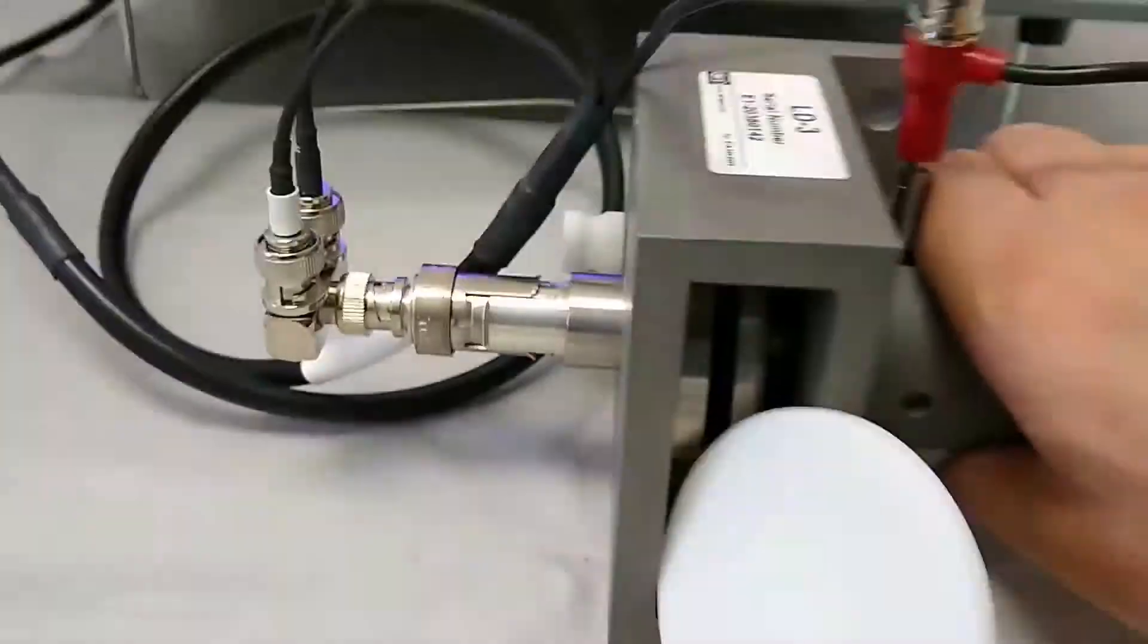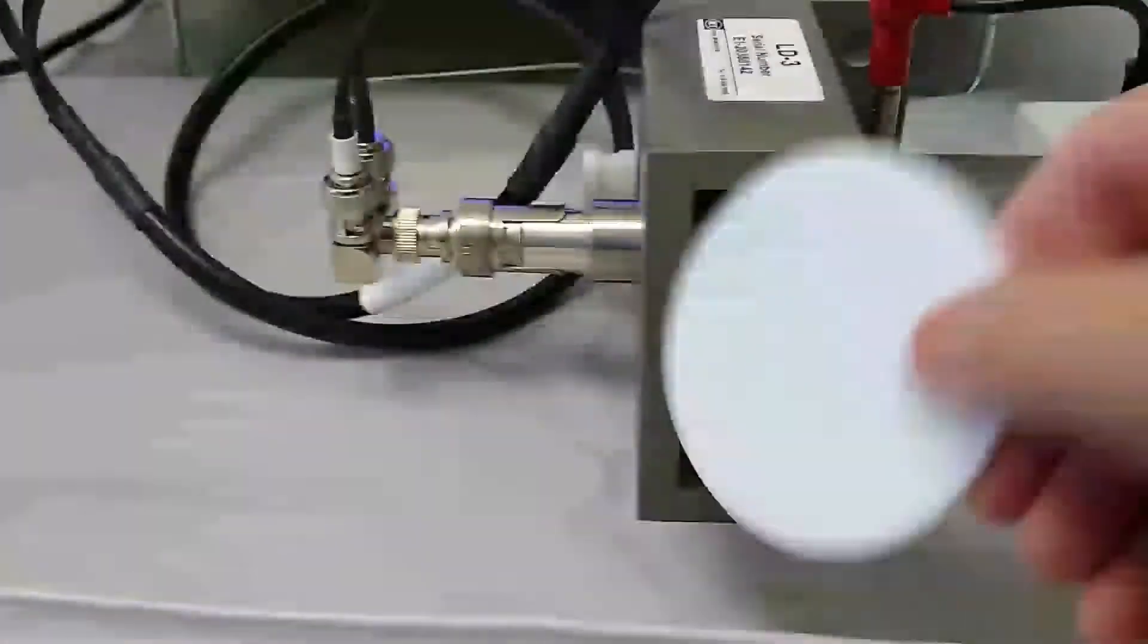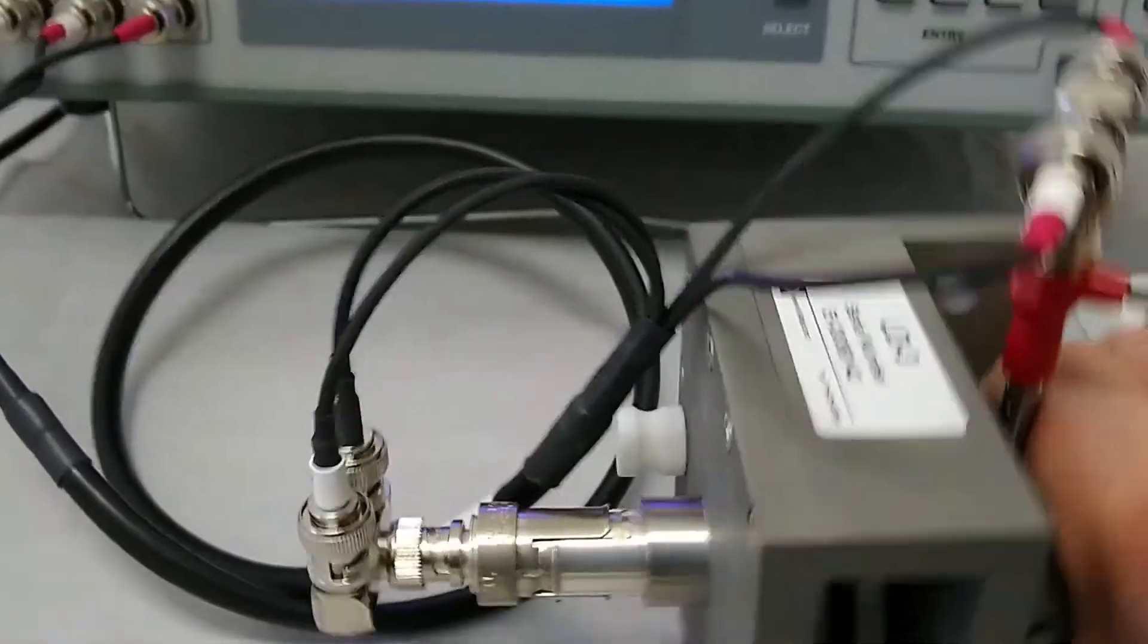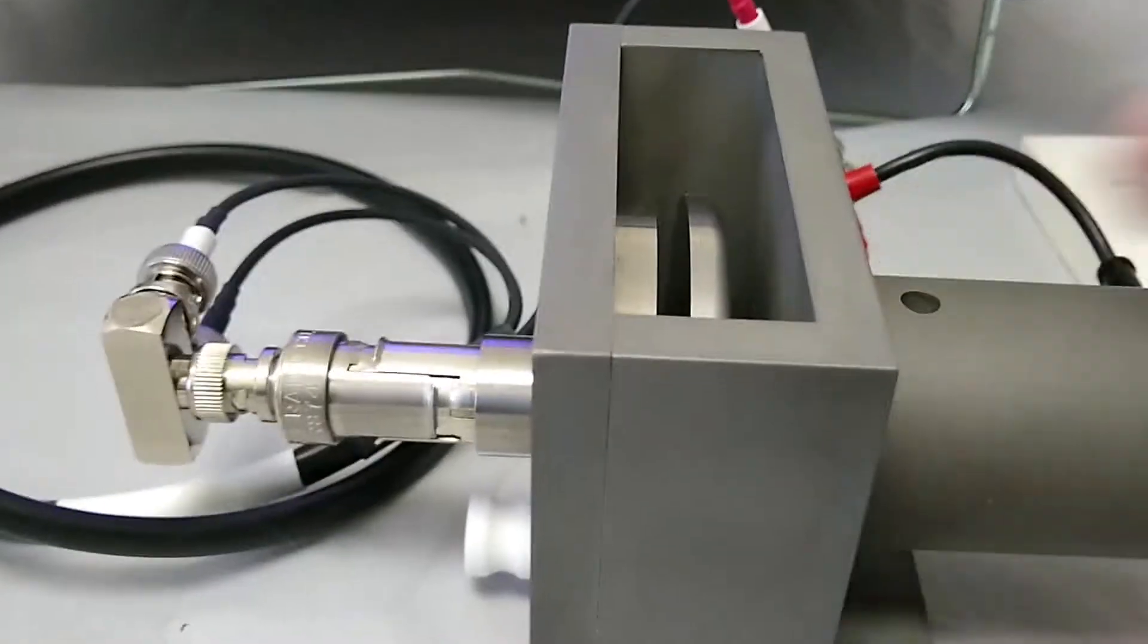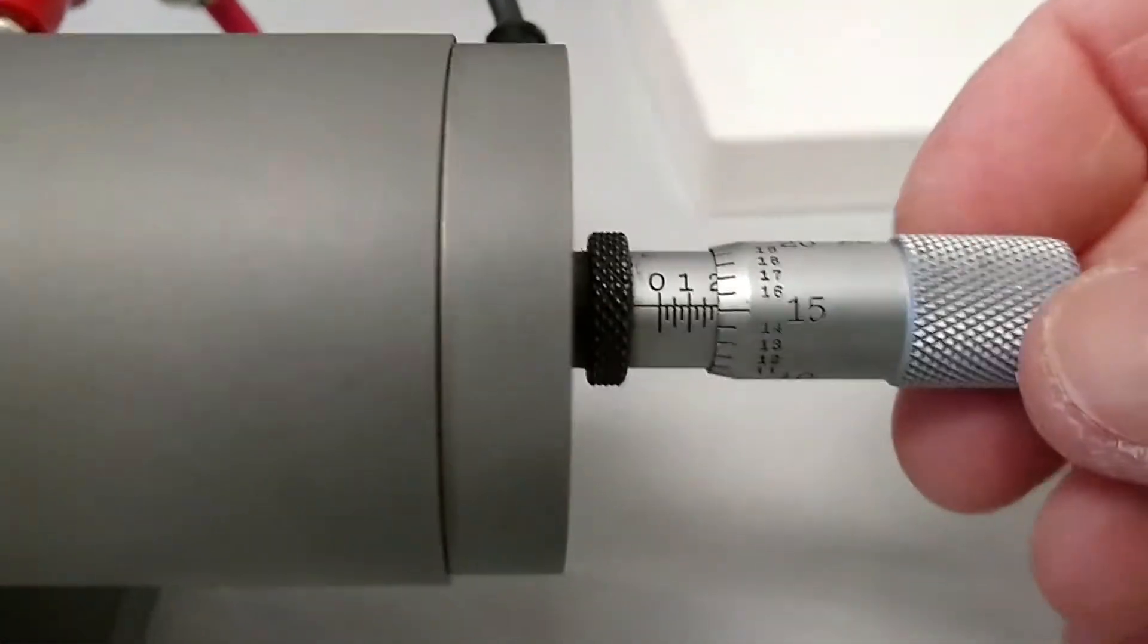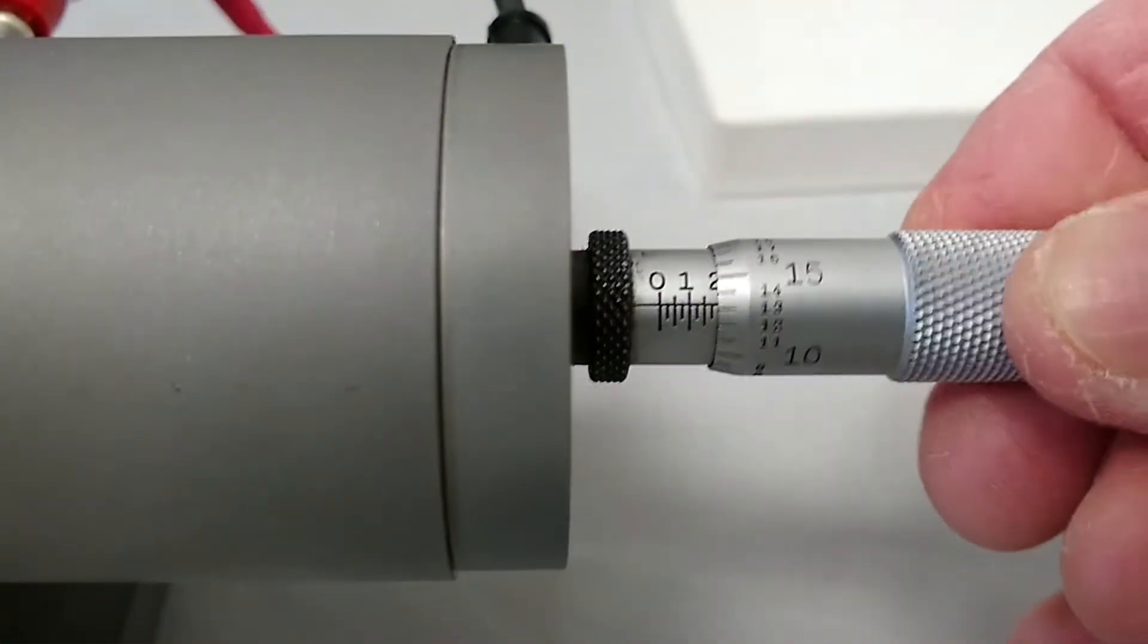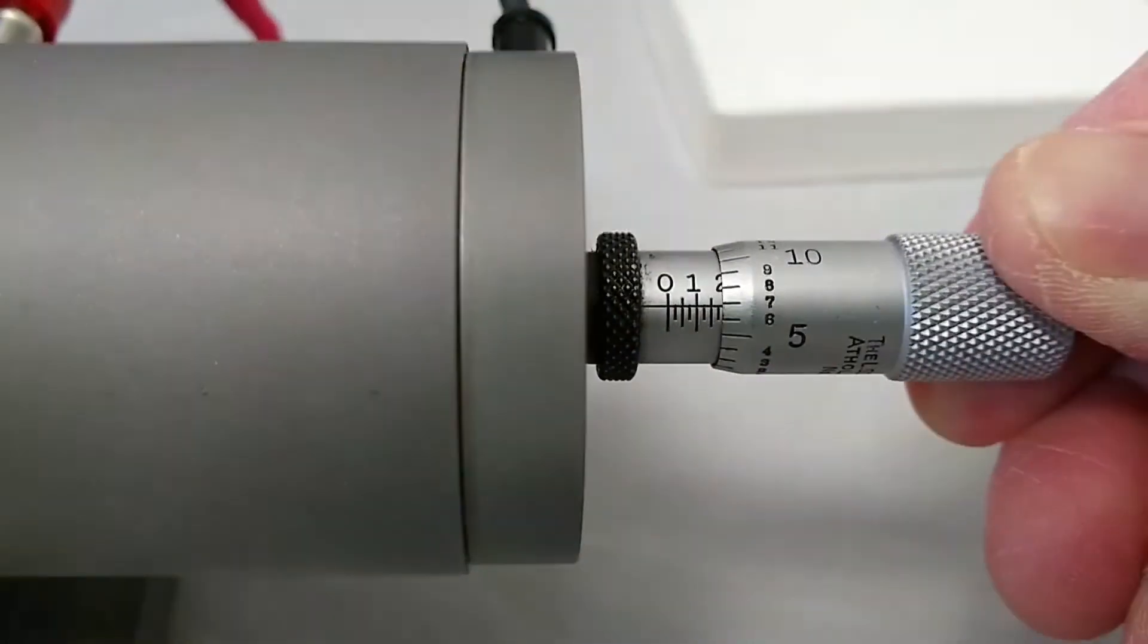At this point, we should be able to dump the Teflon standard out of the cell. Manage to do that nicely. Turn it back over.